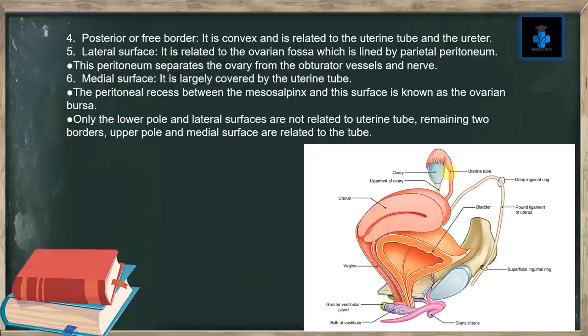Number six, the medial surface is largely covered by the uterine tube. The peritoneal recess between the mesosalpinx and this surface is known as the ovarian bursa. Only the lower pole and the lateral surface are not related to the uterine tube; the remaining upper pole and medial surface are related to the tube.